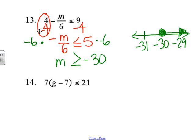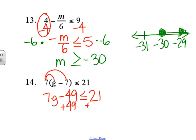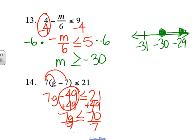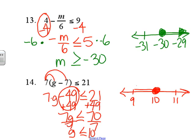Number fourteen: we need to distribute — 7 times g and 7 times negative 7, so minus 49, is less than or equal to 21. Add 49 to each side; the zero pair gives us 7g is less than or equal to 70. After dividing by 7, g is less than or equal to 10. Closed circle, ray goes to the left.